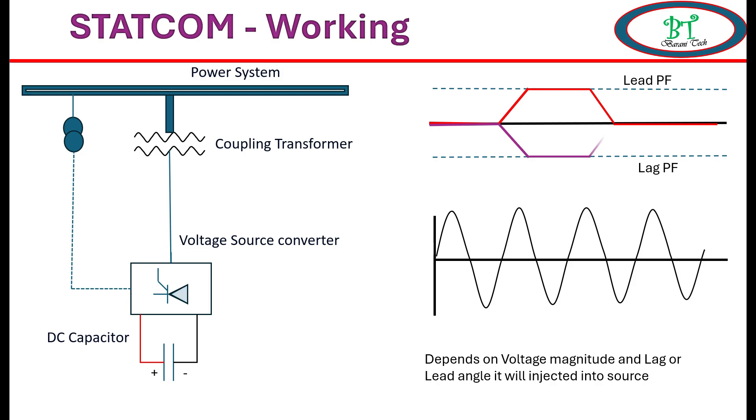On the other hand, if the power factor gets lagged due to inductance load, during this time also the voltage source converter gets on and injects reactive source into the system with corresponding phase angle and magnitude and increases the power factor. Once it gets normal, the switch will get turned off. From this, we clearly understand STATCOM working with injecting power source into the power system.